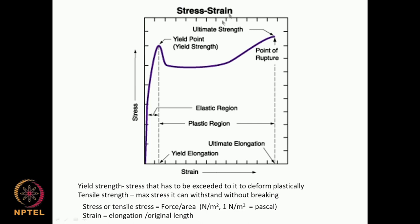Everything will have some stress-strain diagram and they will vary quite a lot. Once you know the stress-strain diagram, you can decide which type of material to use depending upon the application. The tensile strength — the ultimate strength — is here before the material actually breaks. The tensile strength is the maximum stress it can withstand without breaking. This is the elastic region; this is the plastic region.